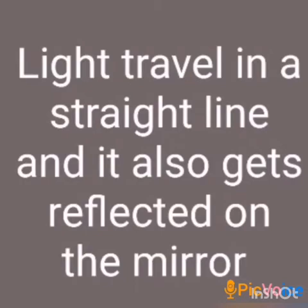In the previous class we have already discussed about light travelling in a straight line and it also gets reflected on the mirror surface or shiny surface. That is, when a ray of light falls on any mirror surface, it gets reflected. A mirror surface can change the direction of light that falls on it.